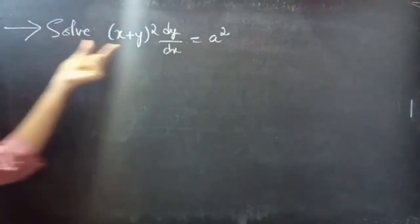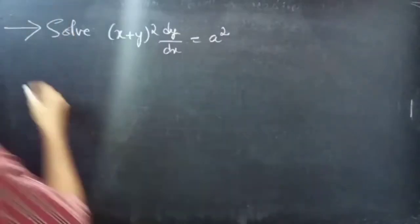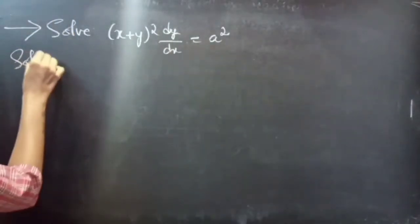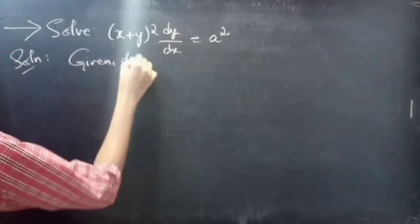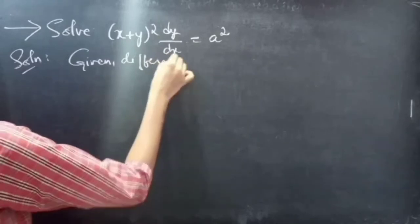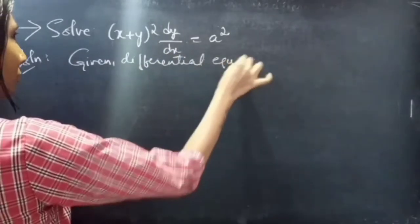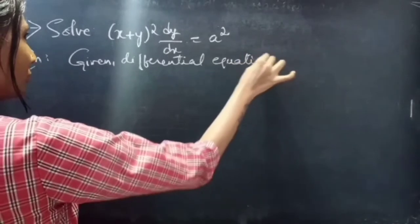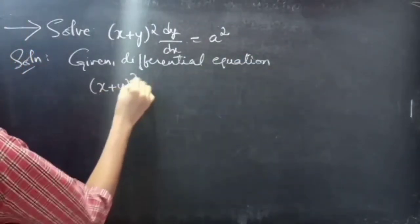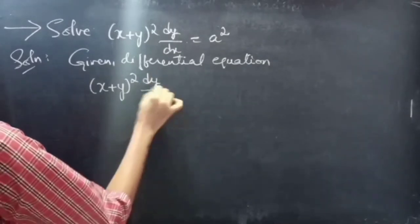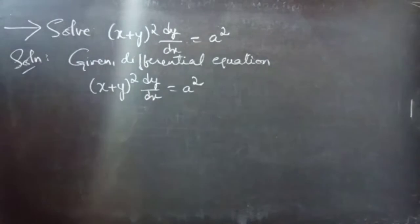Problem: Solve (x + y)² · dy/dx = a². This is the given differential equation.